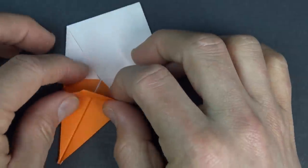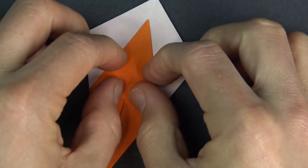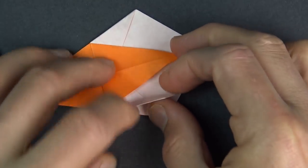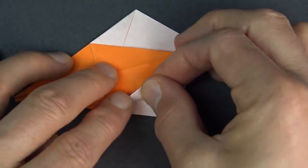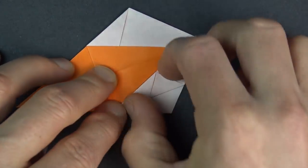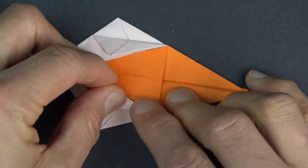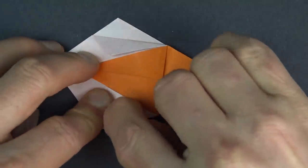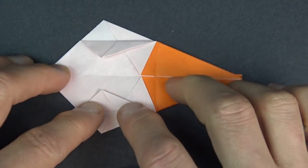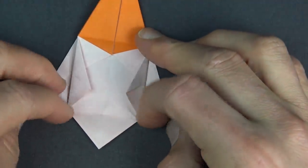Now fold this flap up on these two points so that these two points, that these edges align with these edges.